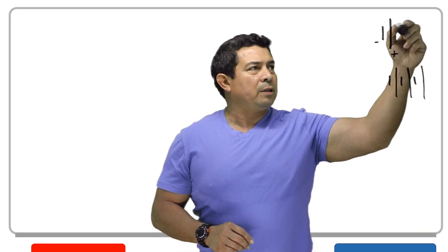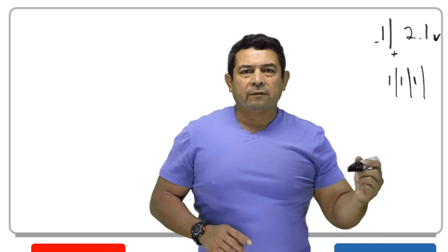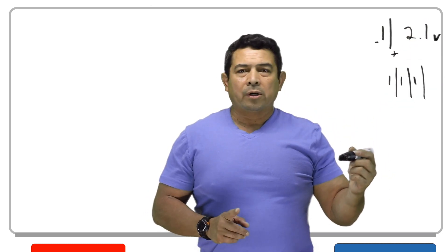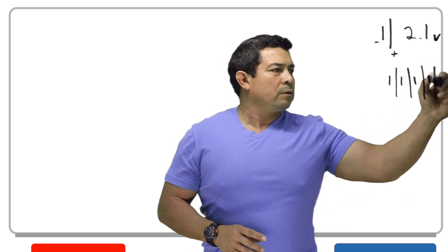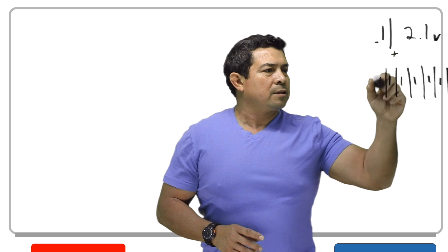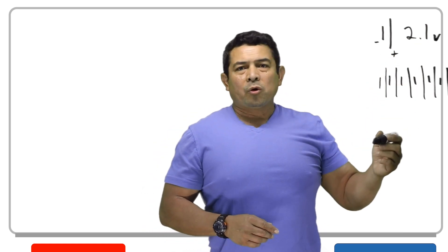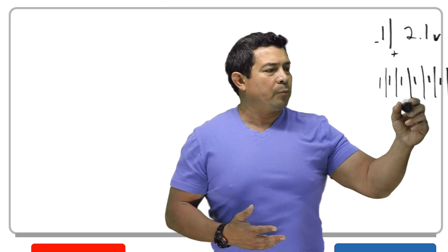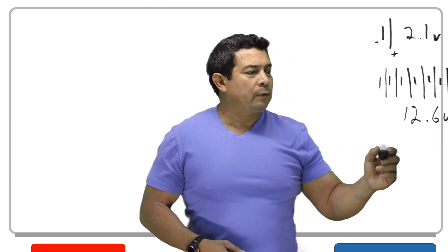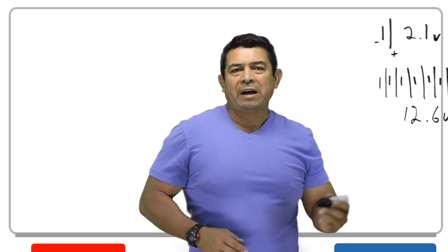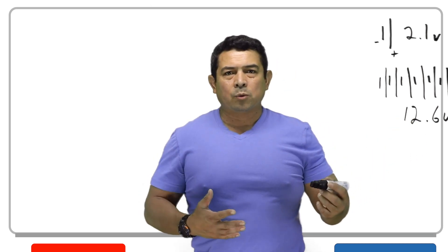Now typically these cells are going to be 2.1 volts — that's the voltage on a cell. So in a car we end up with six cells, so we multiply 2.1 times six and we're going to end up with 12.6 volts.